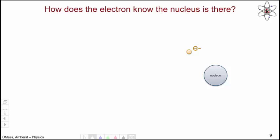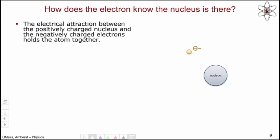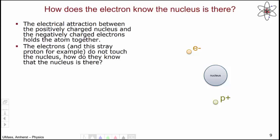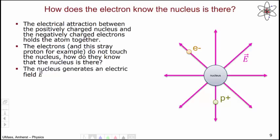So that's gravity. Now let's return to the idea of electricity, the main focus of our course. How does the electron know the nucleus is there? We know that it's the positively charged nucleus attracting the negatively charged electron that holds the atom together. But the nucleus and the electron do not touch. I'm going to add a proton to this situation for purposes of illustration — how does this stray proton know that the nucleus is there? We use the same sort of idea: the nucleus generates an electric field that we call E.